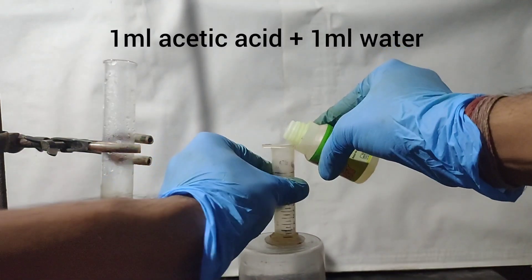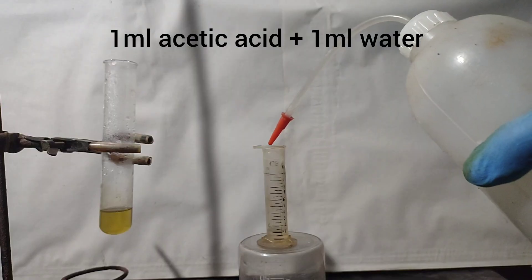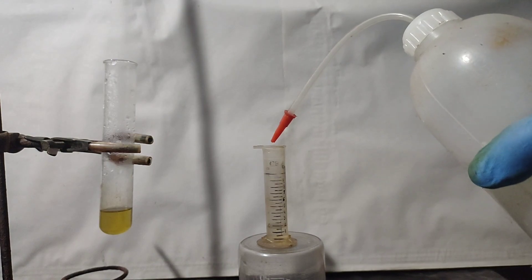Meanwhile, I prepared a 50-50 mixture of glacial acetic acid and water by taking 1 ml of glacial acetic acid and mixing 1 ml of distilled water into it.